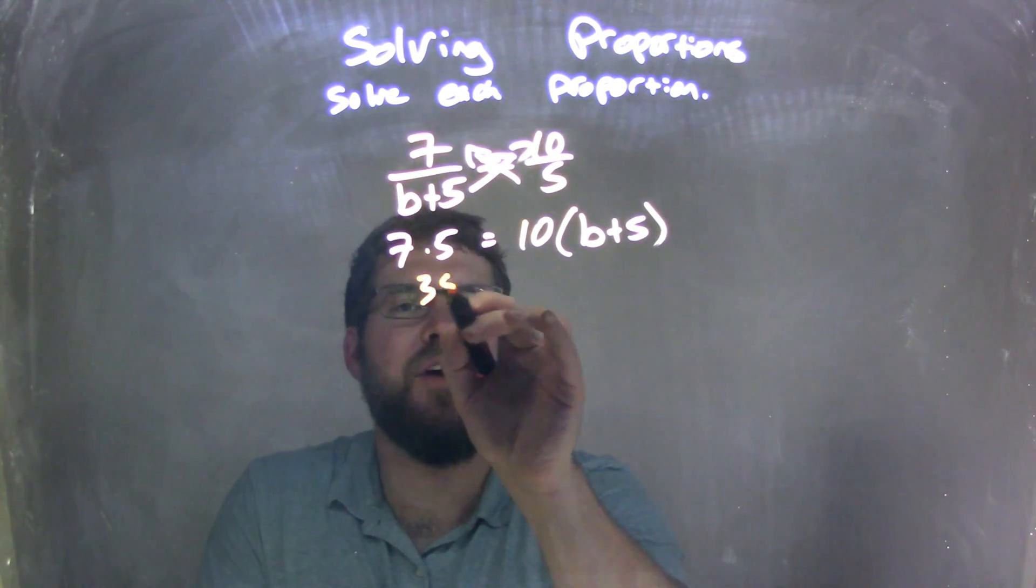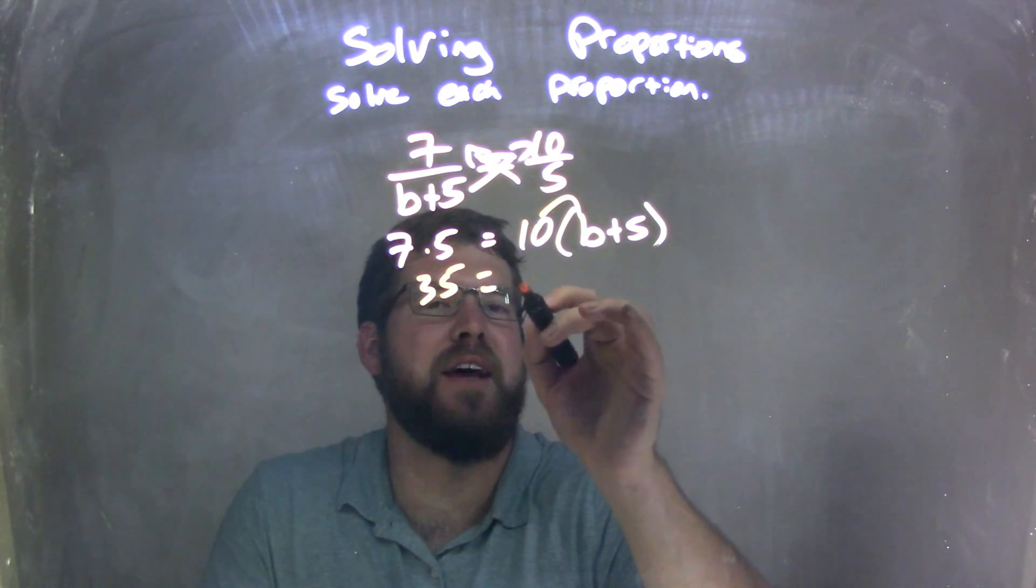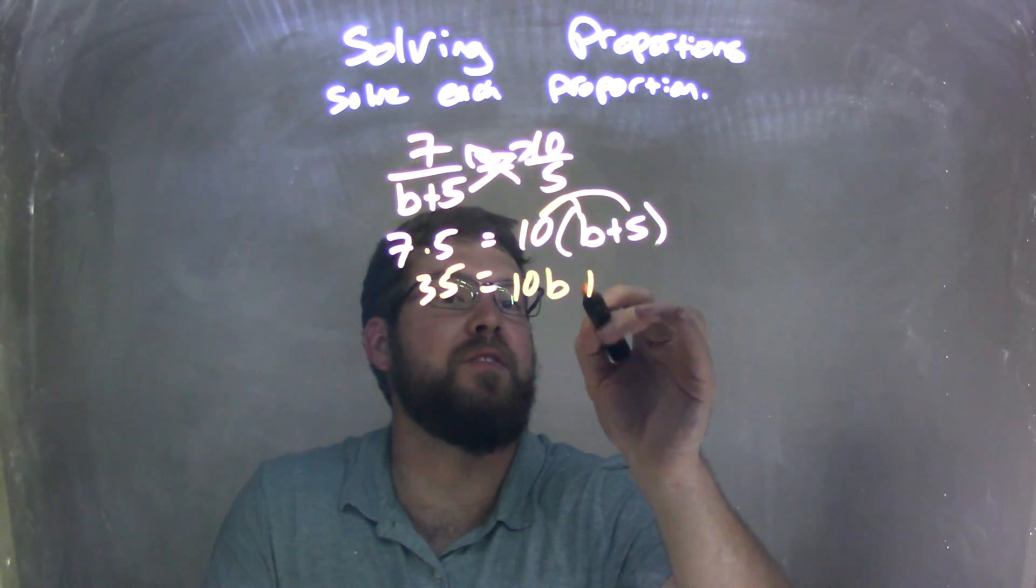7 times 5 is 35. Now, I need to distribute that 10, so 10 times b is 10b, and 10 times 5 is 50.